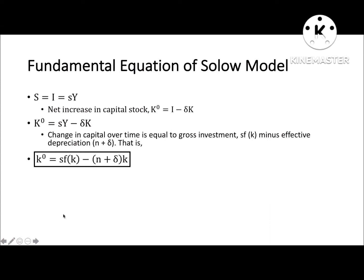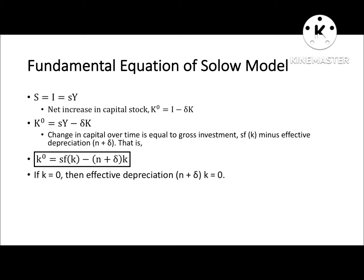Per capita capital K-dot, which changes over time, is equal to sf(K) — gross investment — minus (n plus delta)K, which is the effective depreciation. Theoretically, if capital is equal to zero, then effective depreciation will also be equal to zero.